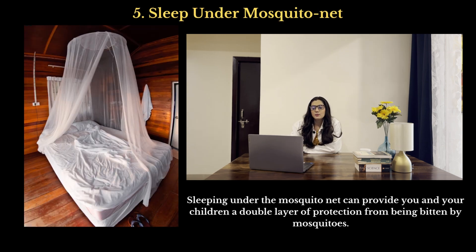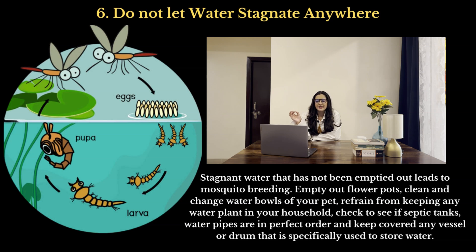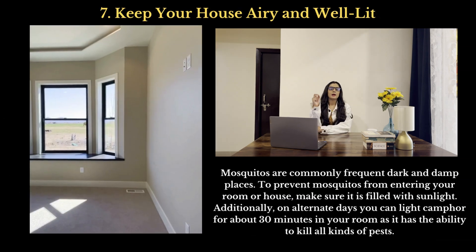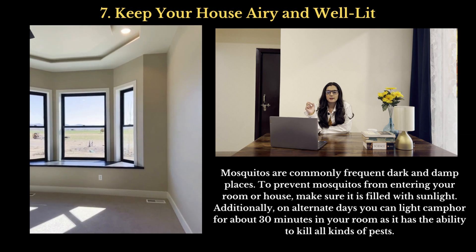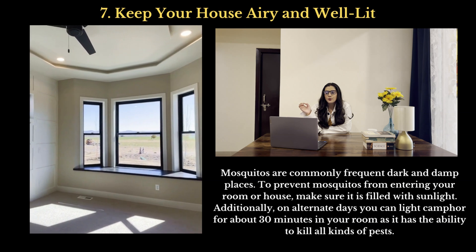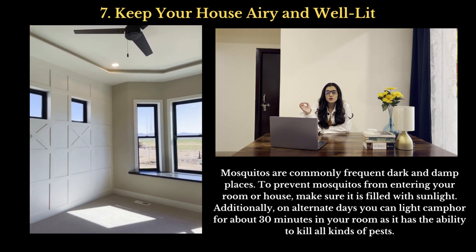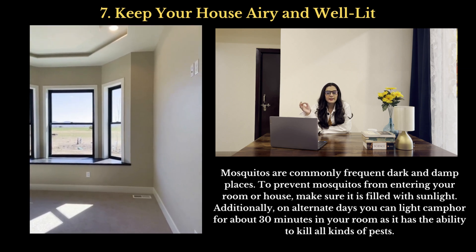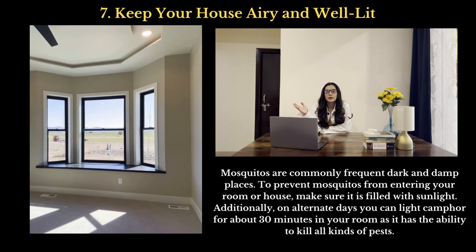Number five is to sleep under a mosquito net, which provides a double layer of protection from mosquito bites. Number six is to not let water stagnate anywhere. Empty out flower pots, clean and change your pet's water bowls, and refrain from keeping water plants indoors. Check that septic tanks and water pipes are in proper order, and keep covered any vessel or drum used to store water. Number seven is to keep your house airy and well-lit, since mosquitoes commonly frequent dark and damp places. Additionally, on alternate days you can light camphor for about 30 minutes in your room, as it has the ability to repel pests.